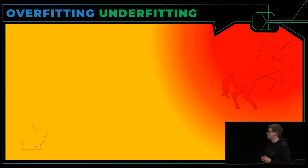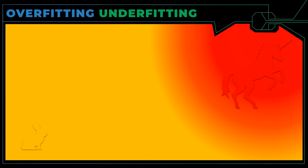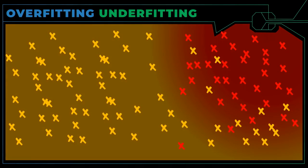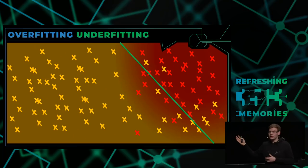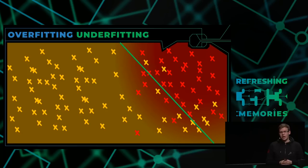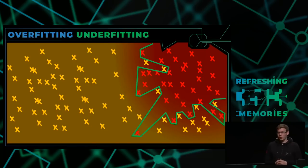In der realen Welt ist das aber nicht so einfach — hier war das simplifiziert. Hier sehen wir eher Datenpunkte, wo die beiden Klassen nicht klar separierbar sind. Zum Beispiel gibt es einige Punkte, die nicht klar identifiziert werden können. Wenn wir die Gerade anschauen, separiert sie das Trainingsset nicht genau. Dieses Problem, dass wir zu wenig trainiert haben, bedeutet: das Modell kann nicht voll abdecken, was wir sehen wollen.